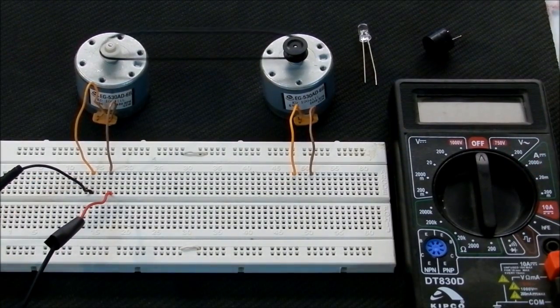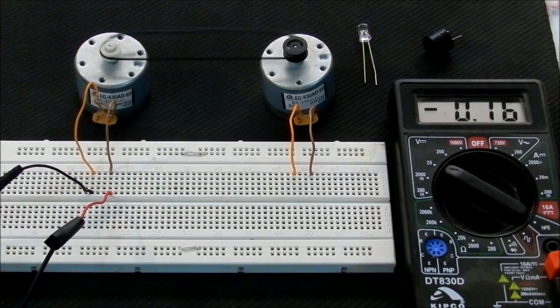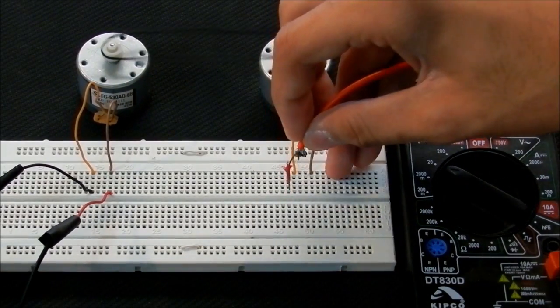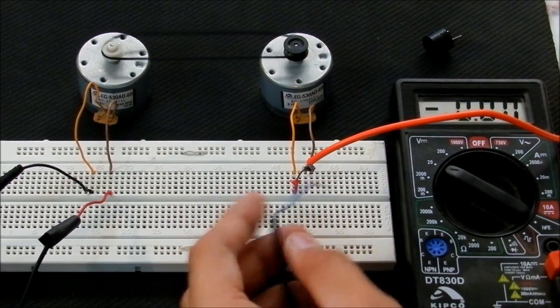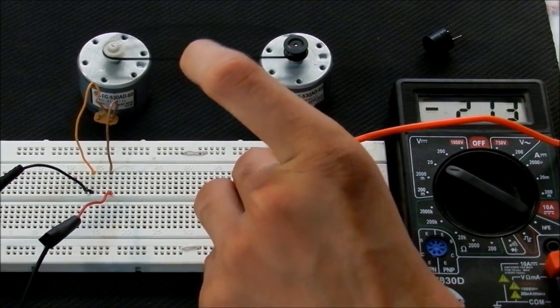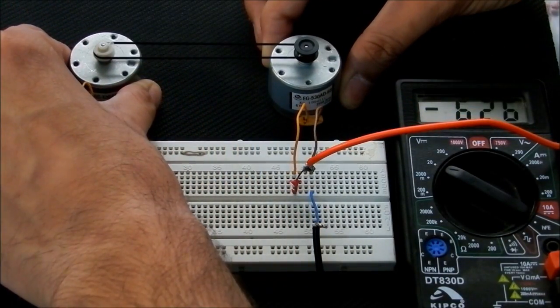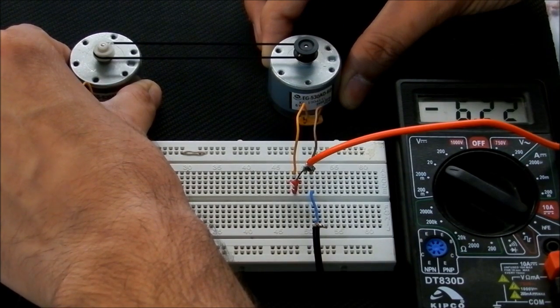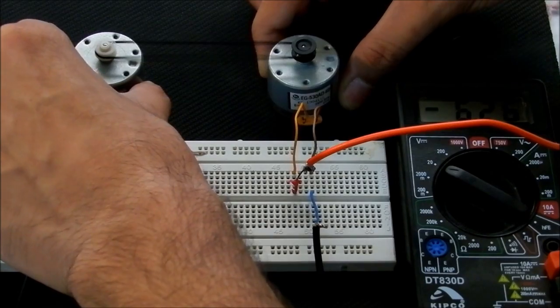To check out how much voltage is produced, we will use a multimeter. It produces about 6.2 volts, which is quite enough to glow more than one LED and a speaker.